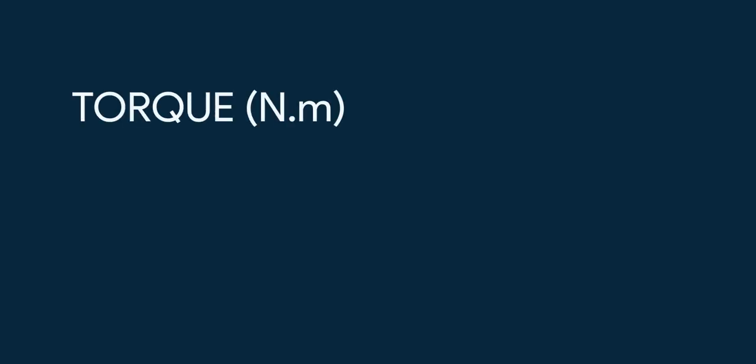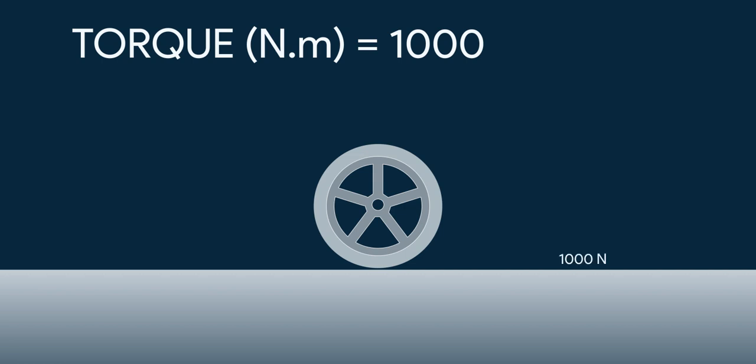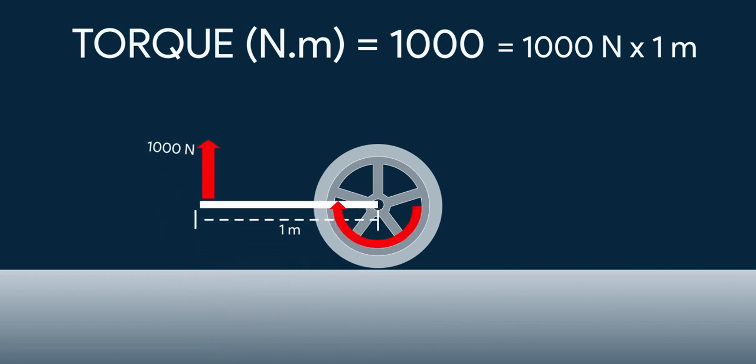Torque is expressed in N·m, which is the product of force and distance from which it's acting. So, 1000 N·m of torque means 1000 N of force when measured from 1 meter, which varies as the radius varies due to the effect of leverage.